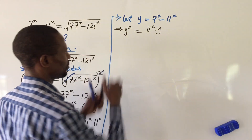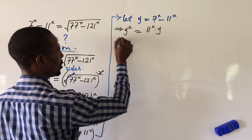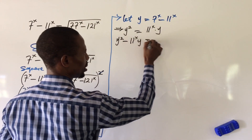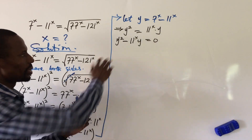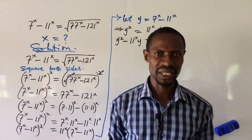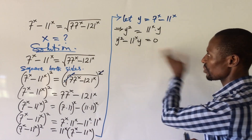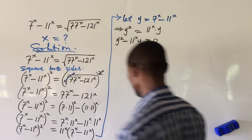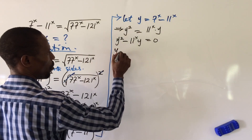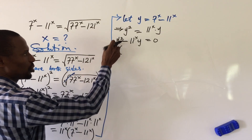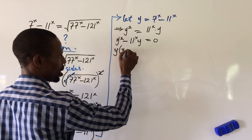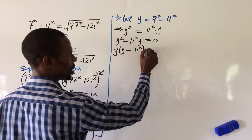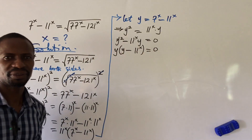Moving the right-hand side to the left, we have y squared minus 11 to the power of x times y equals zero. This is a quadratic equation, so we expect two values of y. We factor out y: y times the bracket y minus 11 to the power of x equals zero.